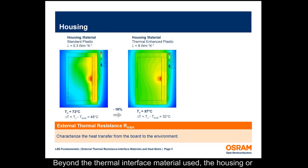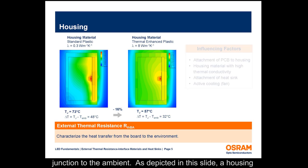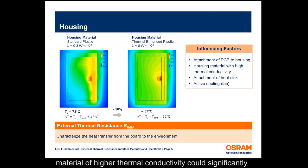Beyond the thermal interface material used, the housing or the heat sink to which the printed circuit board is attached plays an important role in dissipating the heat from the LED junction to the ambient. As depicted in this slide, a housing material of higher thermal conductivity could significantly influence the junction temperature of the LED.